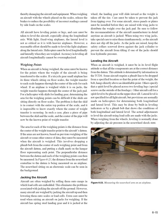Jacking the Aircraft: Aircraft are often weighed by rolling them onto ramps with embedded load cells, eliminating jacking problems. However, many aircraft are weighed by jacking up and then lowering onto scales or load cells. Extra care must be used: if an aircraft has spring steel landing gear, the gear will slide inward as weight is taken off the tire. For some aircraft, stress panels or plates must be installed before raising with wing jacks. When using two wing jacks, raise them simultaneously to prevent the aircraft from slipping. Keep the safety collar screwed down against the jack cylinder to prevent tilting if hydraulic pressure is lost.